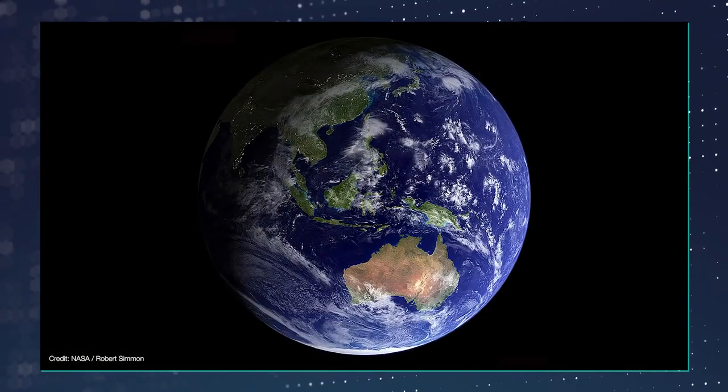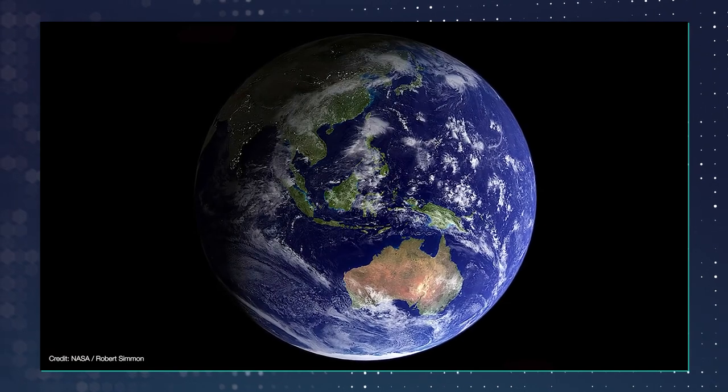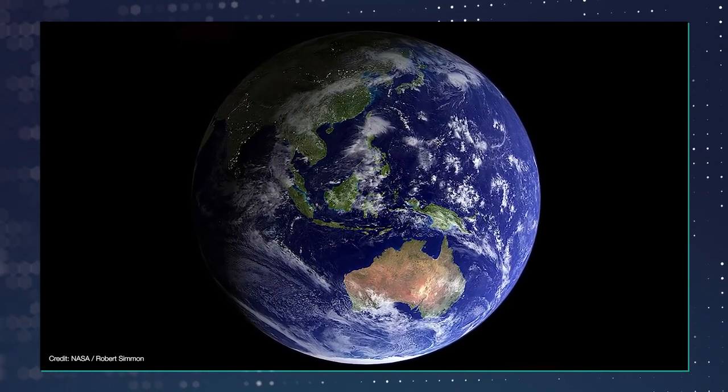This image was composed from four months of data from NASA's Terra satellite. At up to one kilometer per pixel, we can easily make out continents and oceans. We can see color variations and distinguish deserts from vegetation. Not only is vegetation proof of life on this planet, but if we look closely, we can even see lights on the night side. In other words, proof of advanced life.